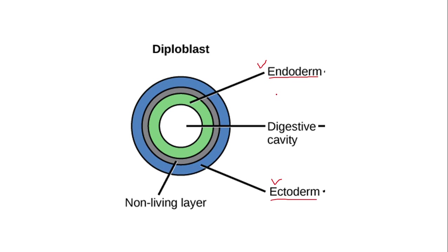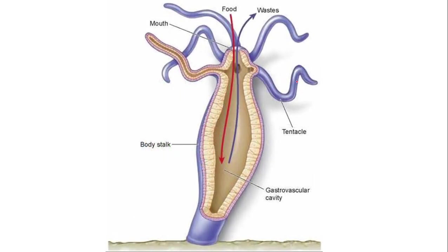The outer layer is the ectoderm and the inner layer is called the endoderm. The ectoderm, which is the outer layer in the embryonic form of hydra, will form the epidermis. The endoderm, which was the inner layer in the embryonic form, will eventually form the gastrodermis. As you can see here, this outer layer of cells is called the epidermis.